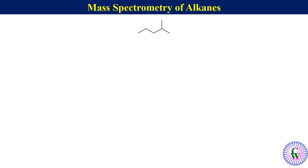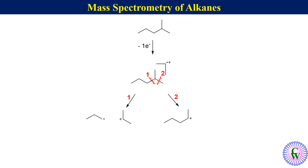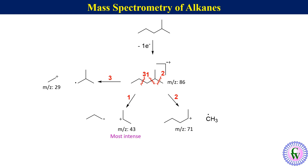Mass fragmentation of 2-methylpentane: removal of one electron gives the molecular ion. Breaking this C–C bond gives a prop-2-yl carbocation and a methyl radical, and breaking another bond gives an isobutyl radical and an ethyl carbocation. The m/z values of these ions are 86, 71, 43, and 29. The highest peak will be that of the ion with m/z 43, as this ion is stable and its generation results in the expulsion of the largest free radical.